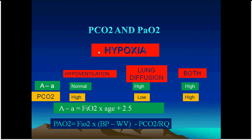You must also examine the relationship between PaCO₂ and PaO₂. If CO₂ is elevated but the alveolar-arterial gradient is normal, the problem is pure hypoventilation with no gas exchange issue. If CO₂ is low and the alveolar gradient is elevated, this is a lung diffusion problem. If both the alveolar gradient is high and CO₂ is high, there is a combined diffusion problem and hypoventilation.